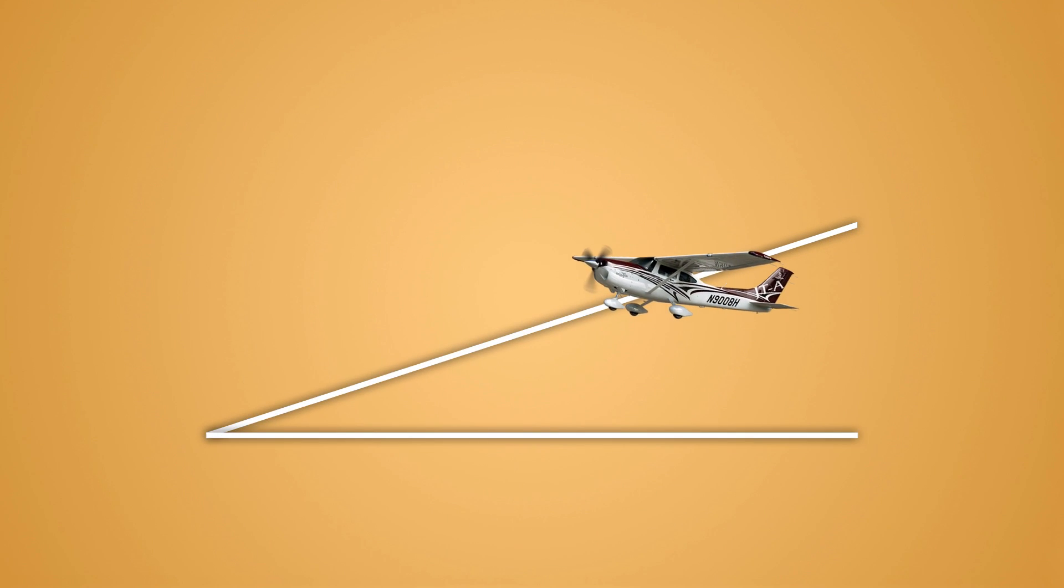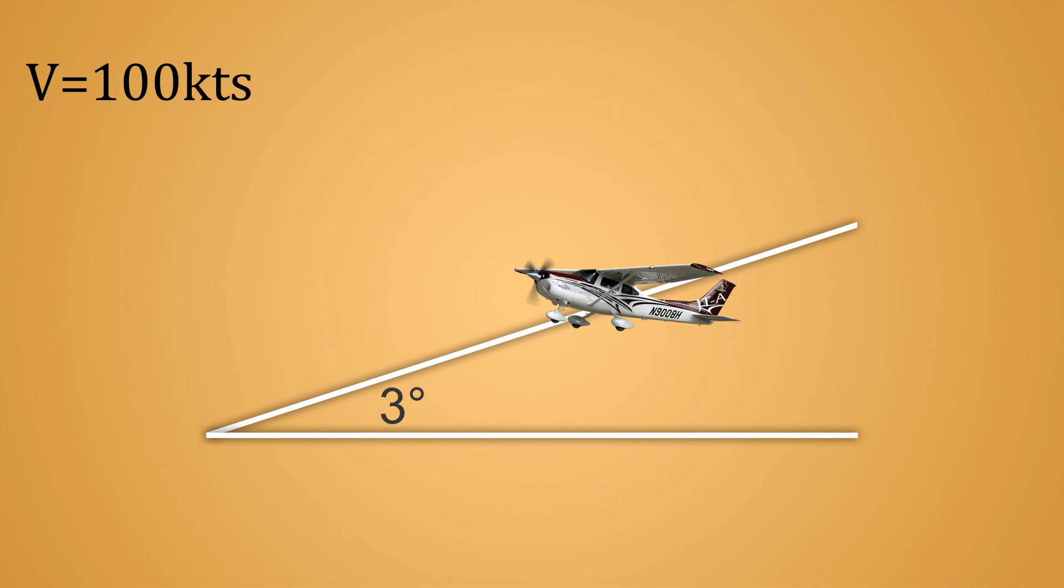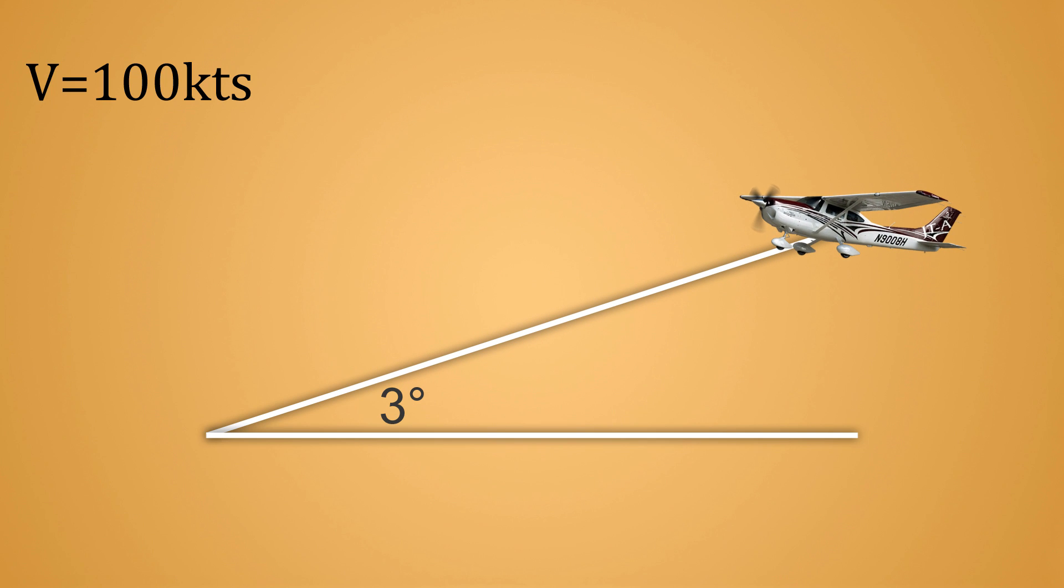Here we have a plane descending on a 3 degree glide path with a speed of 100 knots. To keep the glide path of 3 degrees, the airplane is to lose a certain amount of altitude for a certain distance it covers over the ground. For simplification, we will assume that the indicated airspeed is the same as the ground speed. With such a shallow glide path and no winds, these two speeds are practically the same while flying at a low altitude.